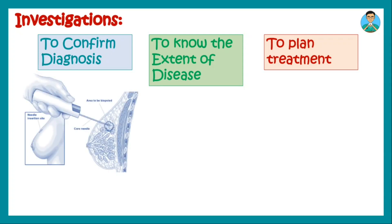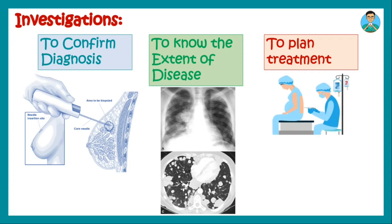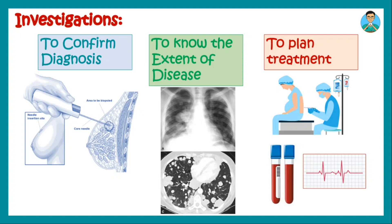For example, taking a case of breast cancer: you perform a biopsy to confirm it is cancer and not a benign tumor. To know the extent of the disease — whether it is metastatic or non-metastatic breast cancer — you go for a chest X-ray or chest CT to look for lung metastasis. Finally, to plan treatment such as a mastectomy, you perform a pre-anesthetic checkup including blood investigations and ECG to determine whether the patient is fit for surgery.